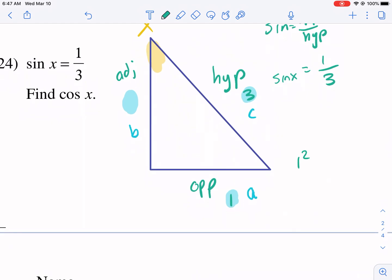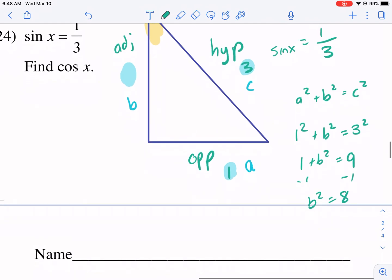So I'm going to say 1 squared, sorry, A squared plus B squared equals C squared. I'm going to solve for B squared. So B, and then I know that's equal to, 3 squared. 1 plus B squared equals 9. So I'm going to subtract 1 from both sides. I get B squared equals 8. I'm going to take the square root of both sides. So I have square root of 8 equals B.